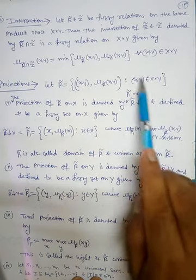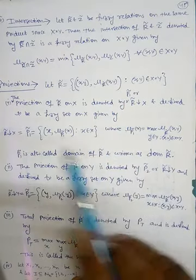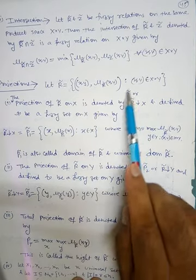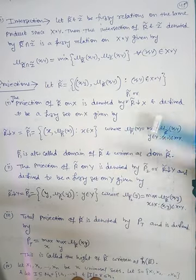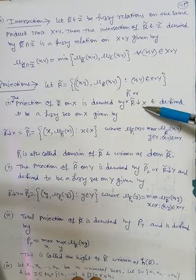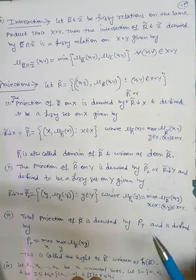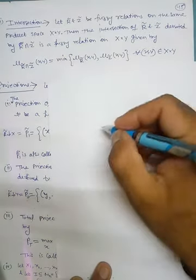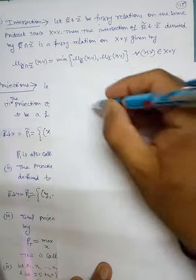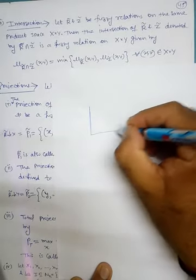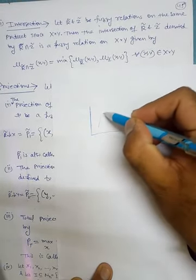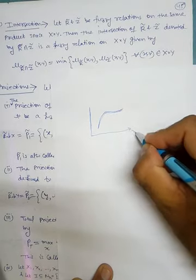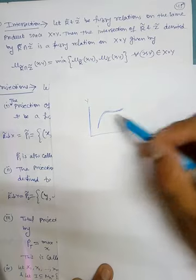So in this relation, we are having these types of elements with their membership values in R. Now the projection of R on X is denoted by either P1 or R with a downward arrow to X. To understand the meaning of this, if you draw the graph you can easily understand. Suppose we have this axis — this is X, this is Y, this is any function, any curve, any boundary.